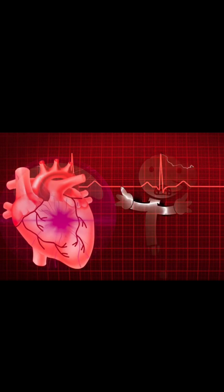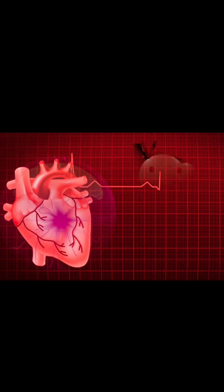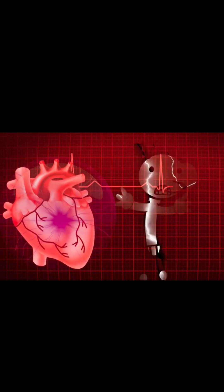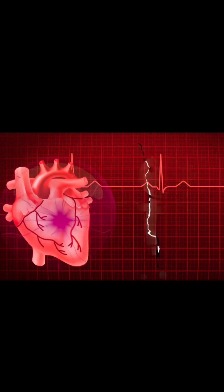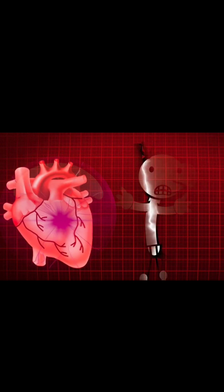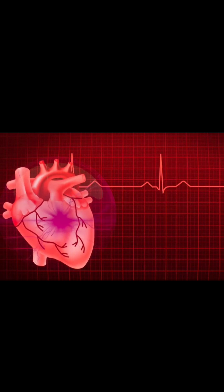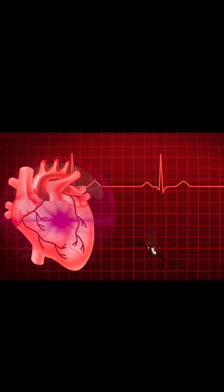Left coronary artery, LCA. Origin: from the ascending aorta, left aortic sinus. Divides into: left anterior descending, LAD artery, which supplies the anterior two-thirds of the interventricular septum and anterior wall of the ventricles; and the left circumflex artery, LCX, which supplies the lateral and posterior wall of the left ventricle and left atrium.